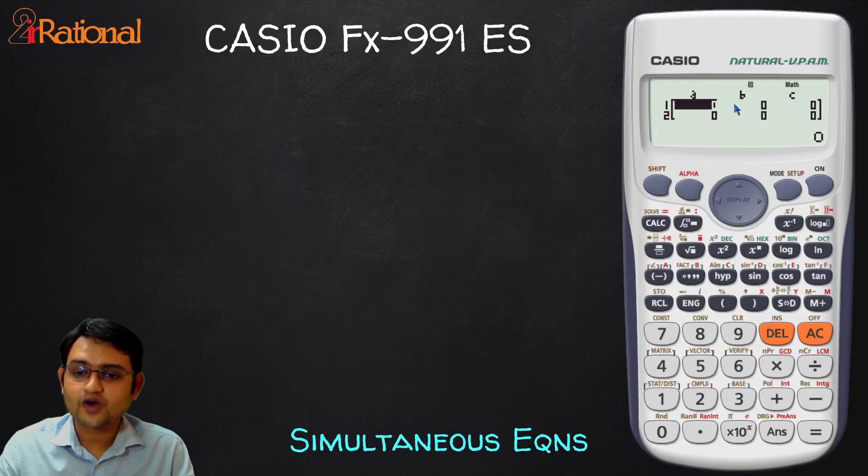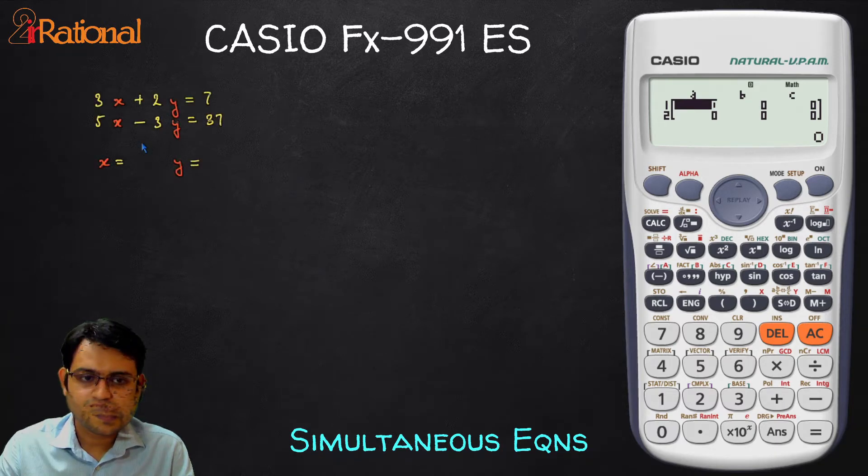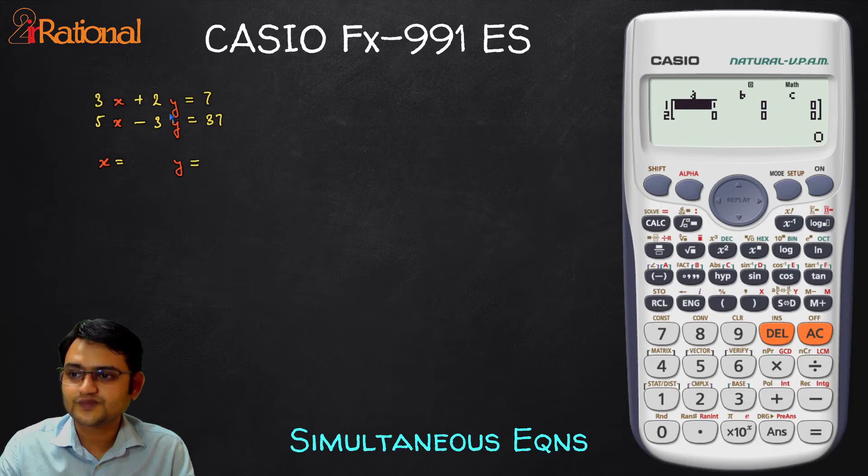Here we have options to put in our coefficients. First let's take an example. In our example we can see we have 3x plus 2y equals 7, and 5x minus 3y equals 37.